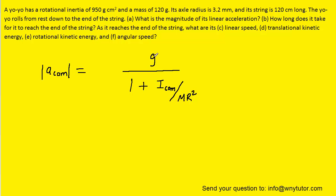In the expression, g is the acceleration due to gravity, 9.8 meters per second squared. We have I_com, which is the rotational inertia about the center of mass of the yoyo. m is the mass itself, and r is the radius of the axle, which was given to us directly in the question.